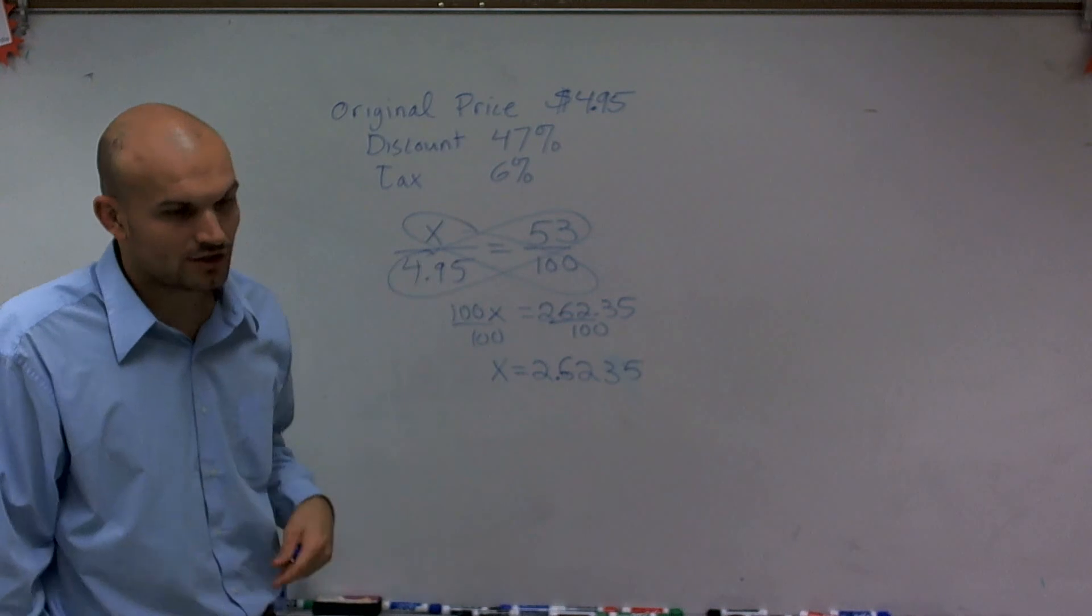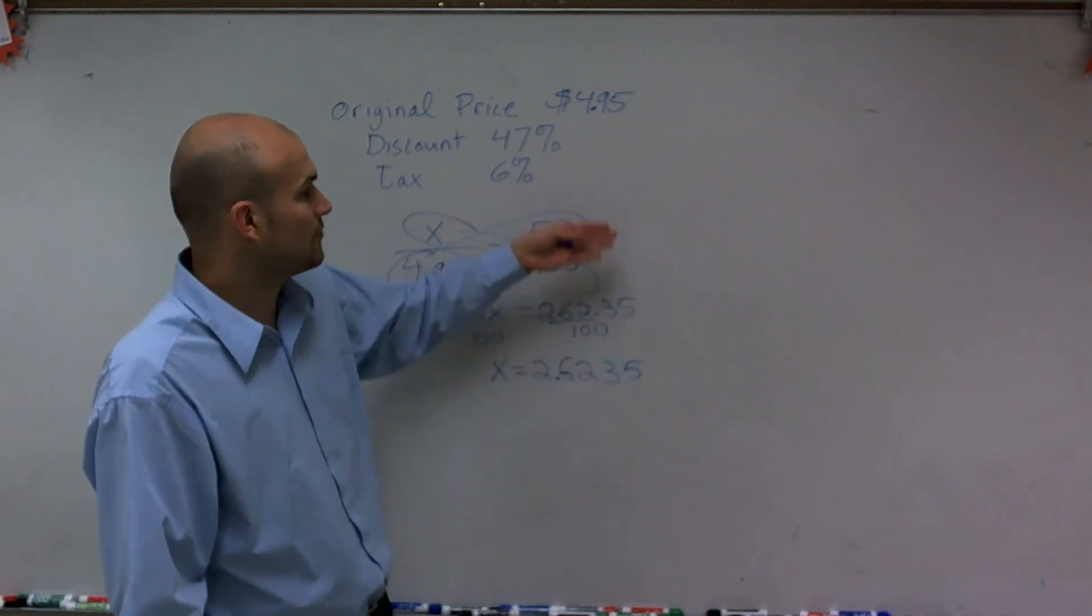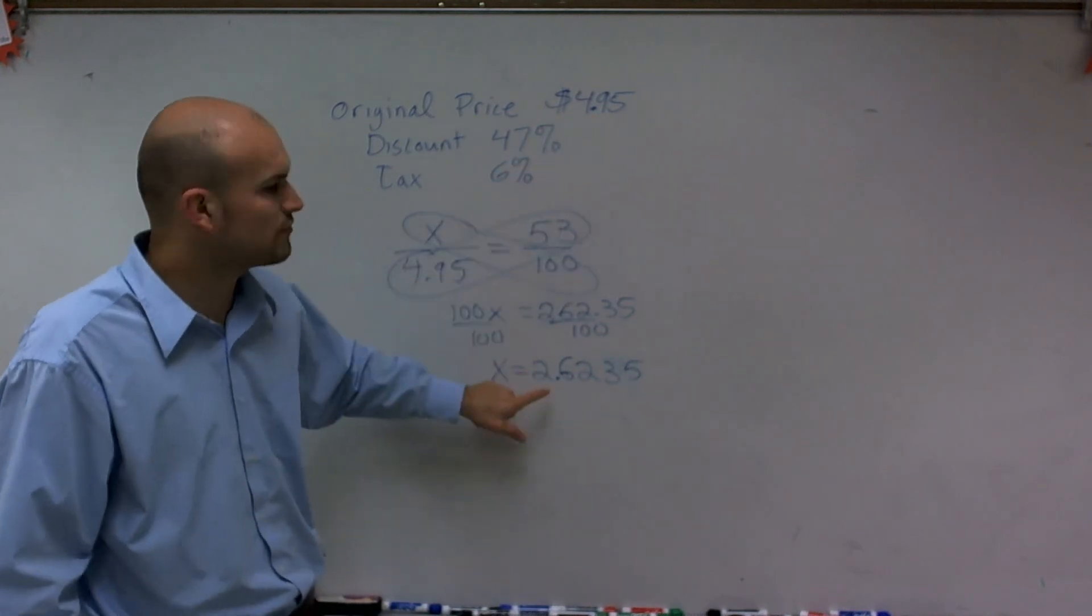Now the next thing is we need to calculate the tax. The tax is going to be how much you're purchasing the game for. You're not purchasing the game for $4.95. You're purchasing the game for its discounted amount.